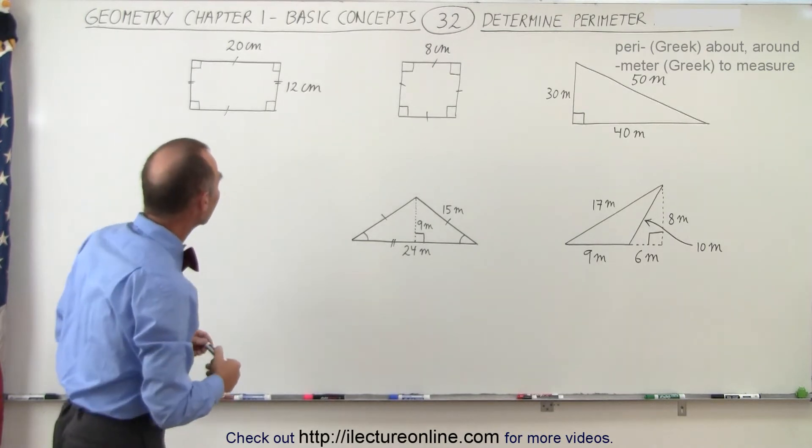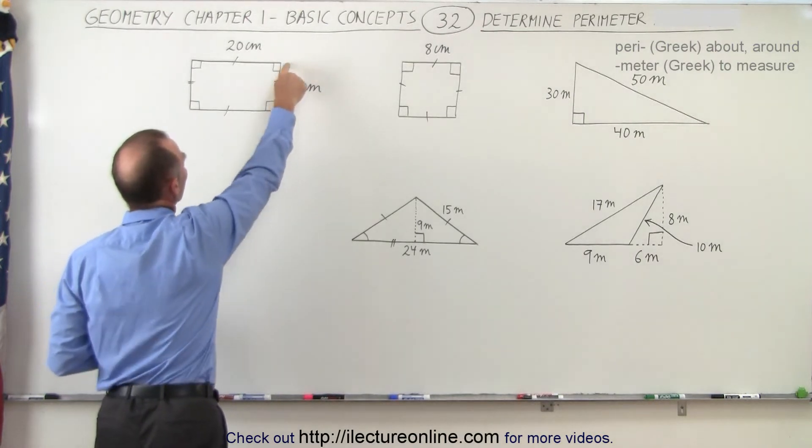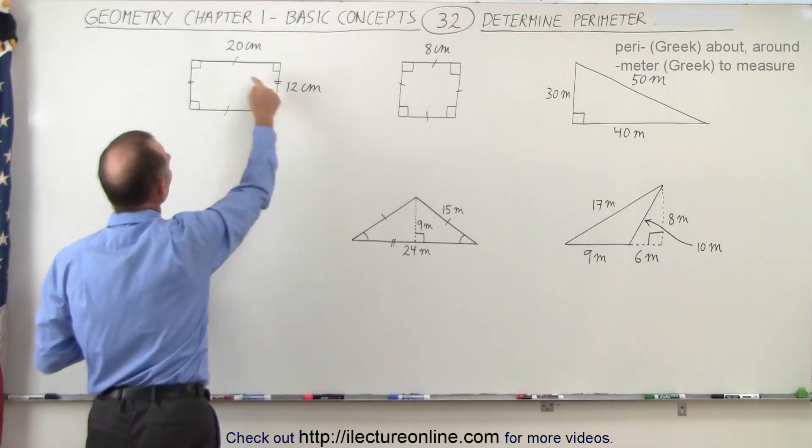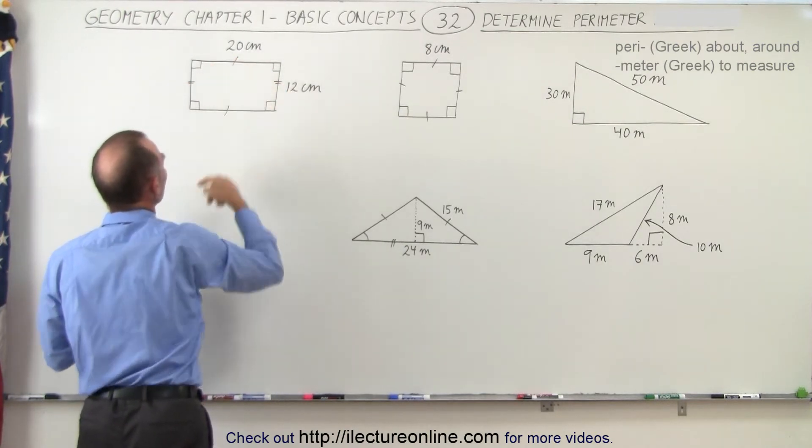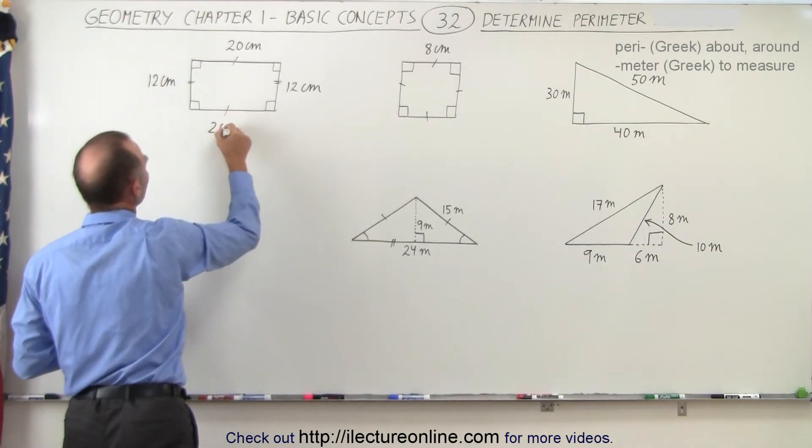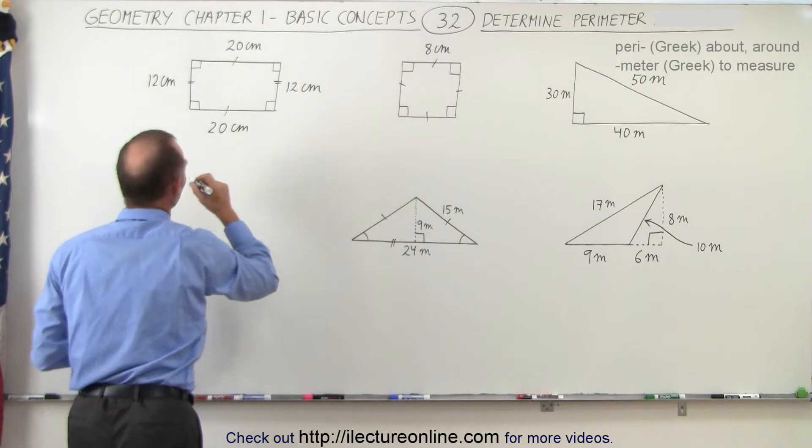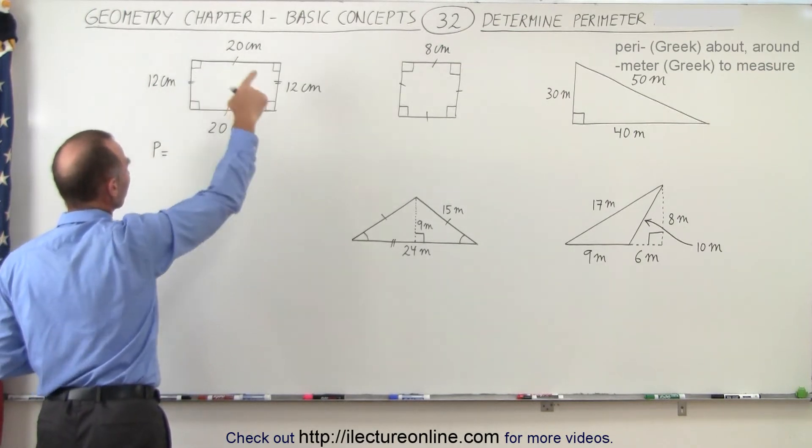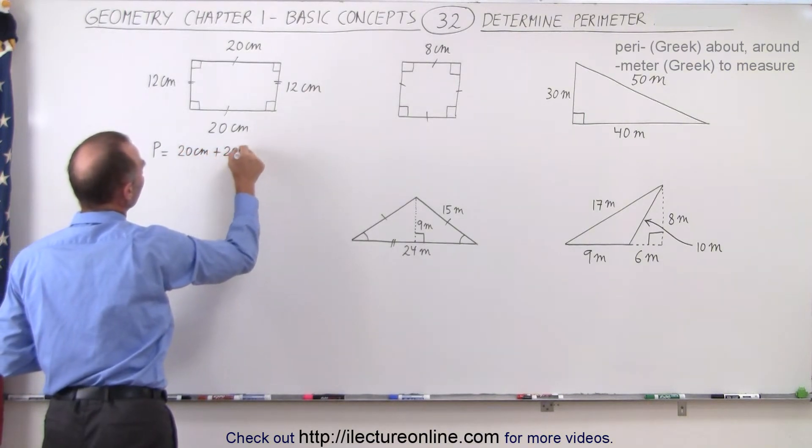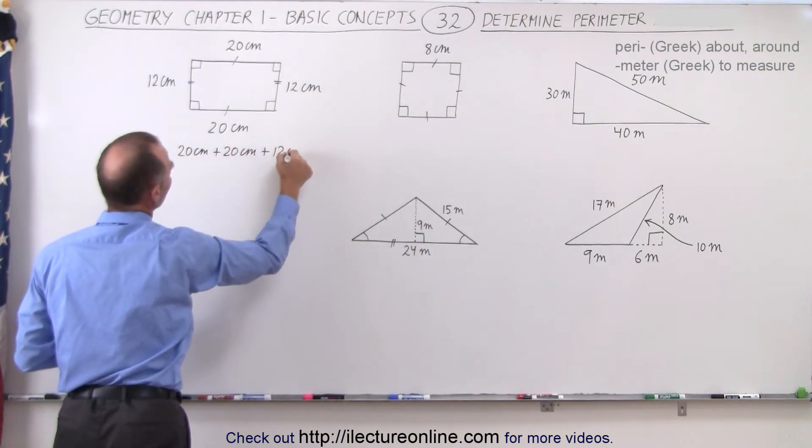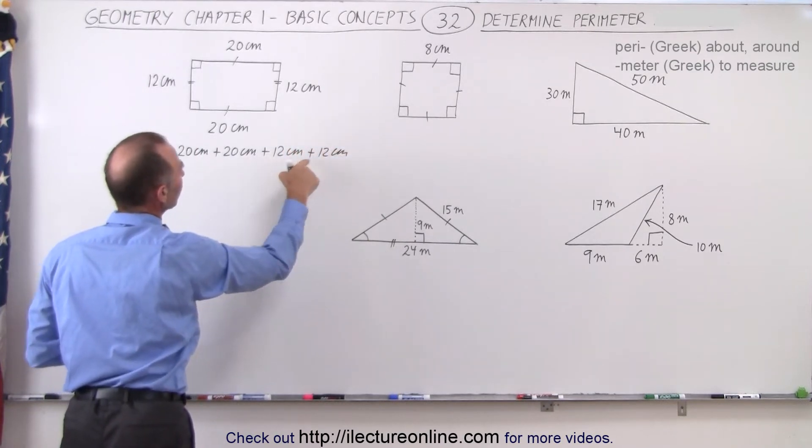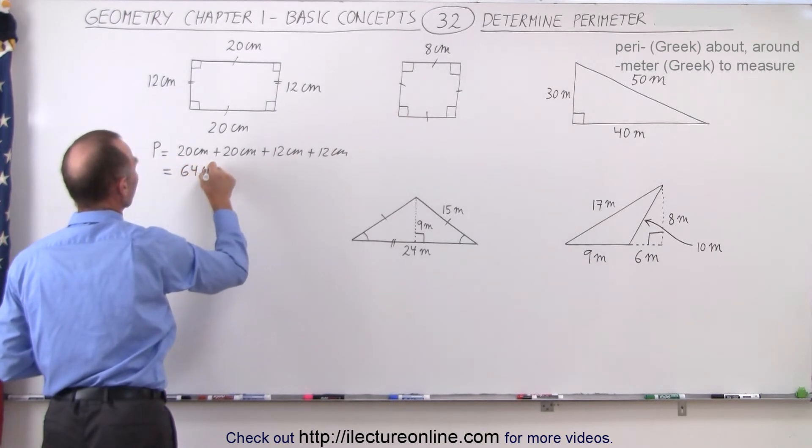So first, let's find the perimeter of each of these figures. You can see here that this side is 12 centimeters long, this side is 20 centimeters long, and since these two opposing sides are congruent, that means this side is 12 centimeters as well, and this side is 20 centimeters. So therefore, the perimeter P is simply equal to the sum of all of them. So we can say 20 centimeters plus 20 centimeters plus 12 centimeters plus 12 centimeters. And when we add all that together, that's 64 centimeters.